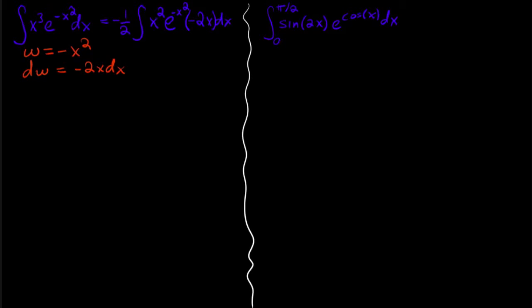Now notice what I've got is this right here is dw. And then this guy right here, that's e to the w. And then it looks like I almost have another w right here. I just need to put in a negative sign. So I'm going to put the negative sign right there. And then I'm going to change that sign out there. So that turns this guy into another w.